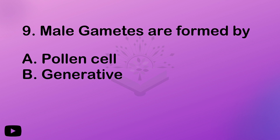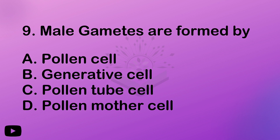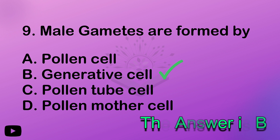Next: male gametes are formed by — pollen cell, generative cell, pollen tube cell, or pollen mother cell? Male gametes are formed by the generative cell. Option B.